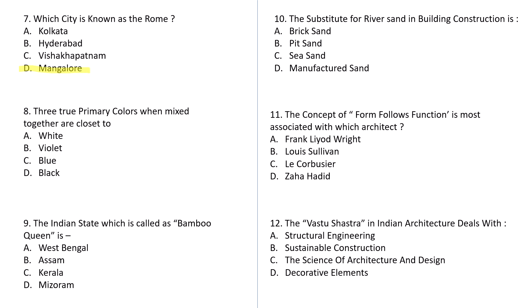Question number 8: Three true primary colors when mixed together are closest to which color? A: White, B: Violet, C: Blue, D: Black. This is a very easy question — try to answer it.